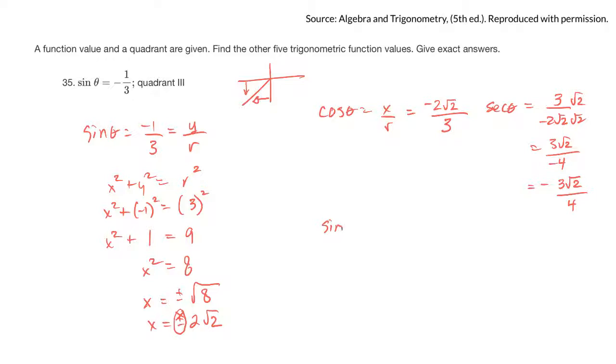And then you do the same thing for, well I guess I know what sine is already, but I do the same thing for tan theta. It's y over x. y is negative 1, x is negative 2 root 2, and then simplify it from there.